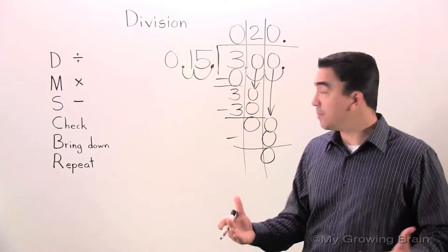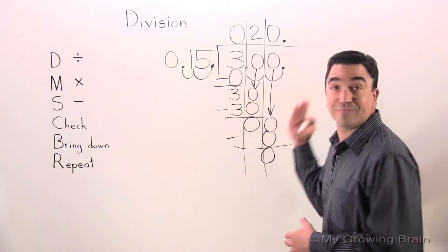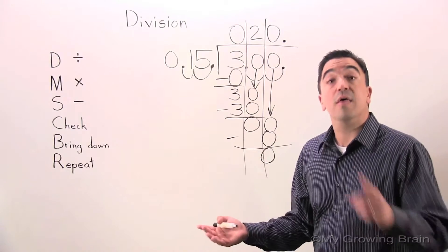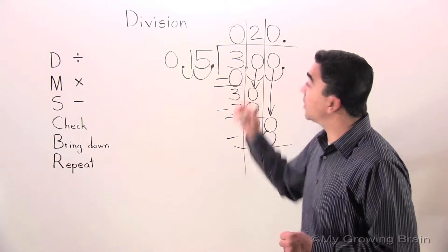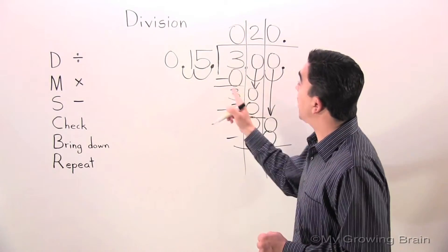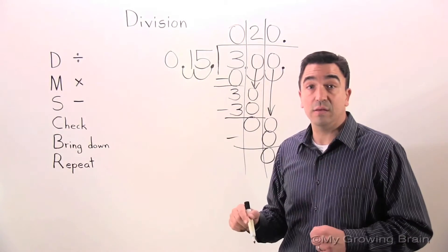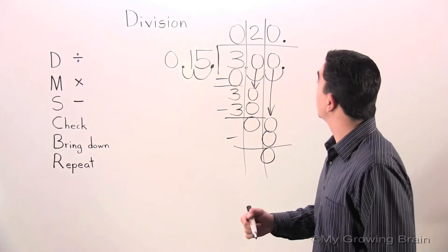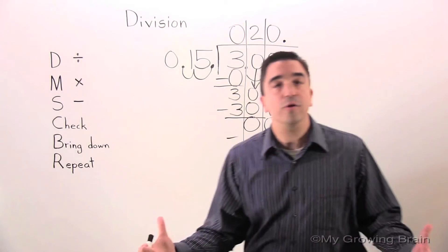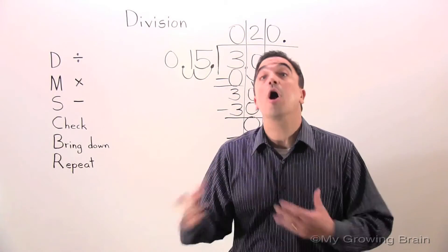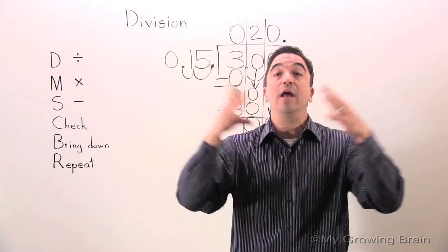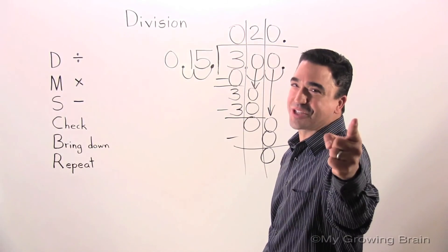Next step: Bring down. Nothing to bring down. Therefore, 3 divided by 0.15 gives us a quotient of 20. That concludes our lesson on division. Coach Mike at My Growing Brain, Challenge Yourself.